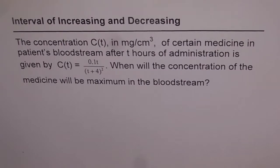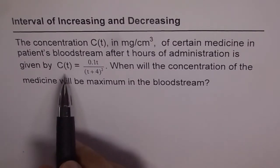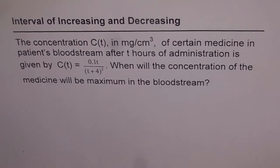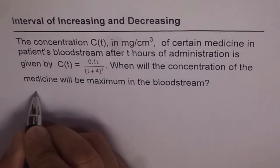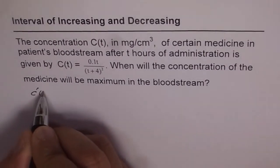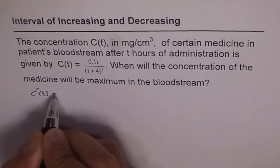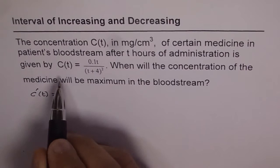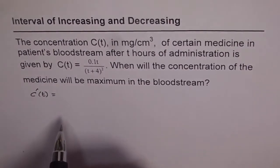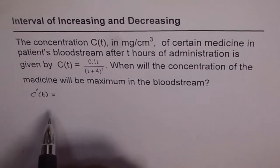To find the maximum, we have to find the critical points. The critical points are the points where the derivative of the function is 0 or undefined. So let us first find C'(T), meaning we will find the derivative of this function with respect to time.